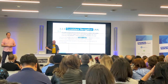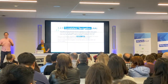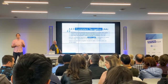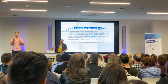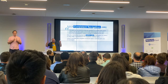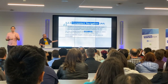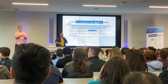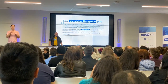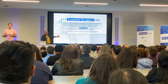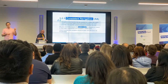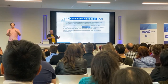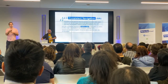3.2.3 Consistent Navigation: 'Navigation mechanisms that are repeated on multiple web pages within a set of web pages occur in the same relative order each time they are repeated, unless a change is initiated by the user.' This only requires that the relative order in which navigation controls appear on multiple related pages is always the same. It doesn't mean — as you might infer from the title — that you always have to have the same controls or buttons or navigation mechanisms. It's all about the order of where that navigation happens within the page.